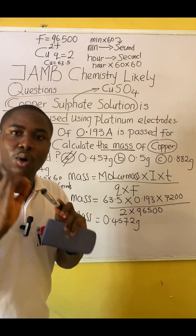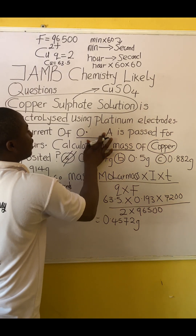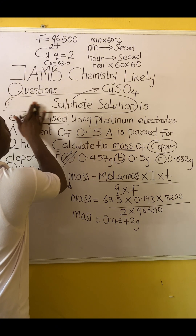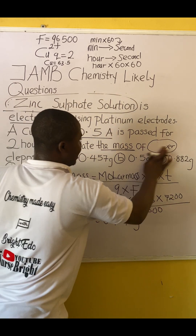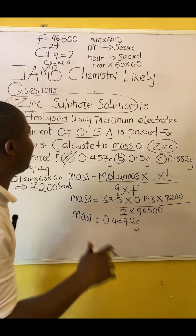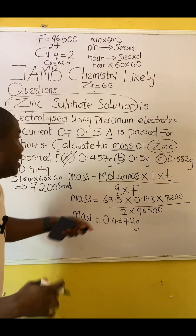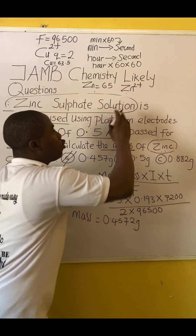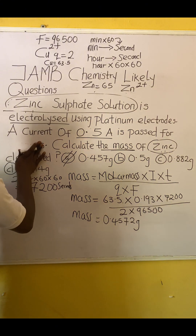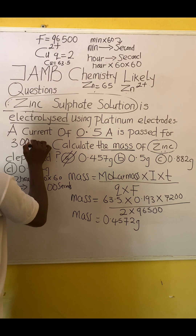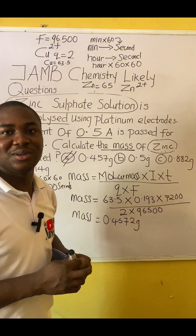Here is your own practice question. Change the parameters: current becomes 0.5 amperes, and the solution is zinc sulfate instead. Calculate the mass of zinc. Zinc's atomic mass is 65, so molar mass is 65 grams per mole, and zinc's charge is Zn²⁺, so q = 2. The time will be 300 minutes — remember to convert minutes to seconds by multiplying by 60. Provide your answer in the comment section.